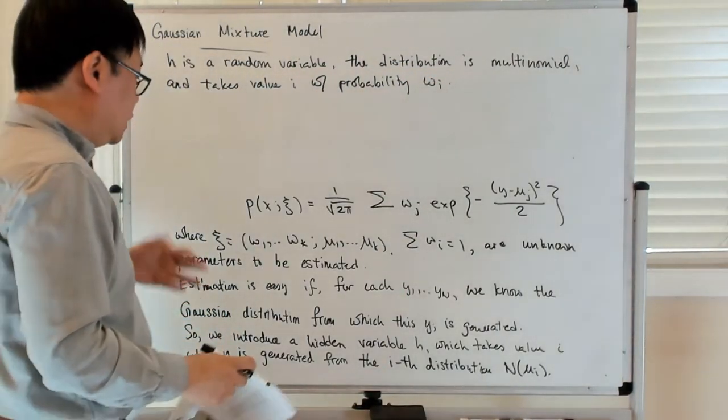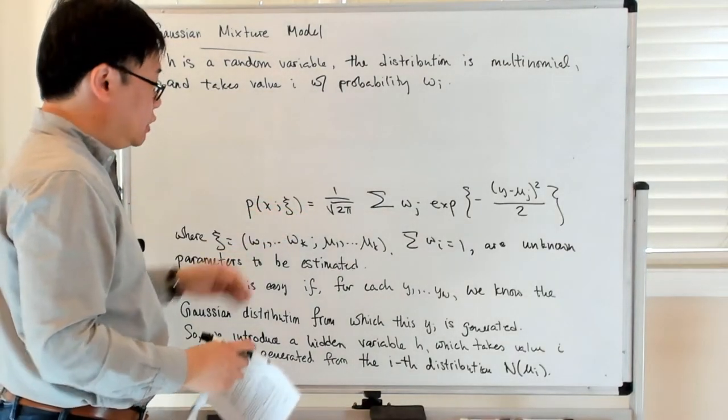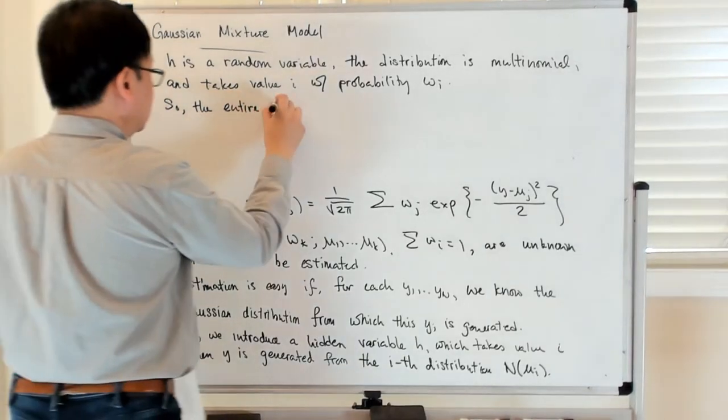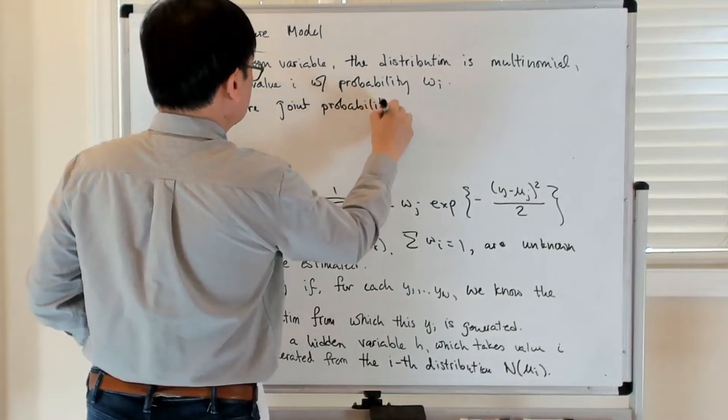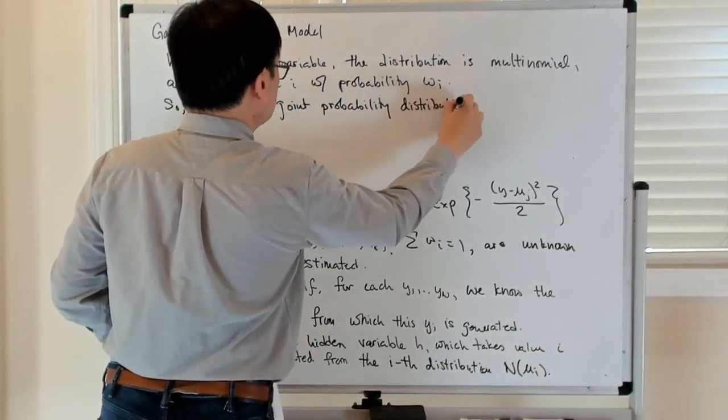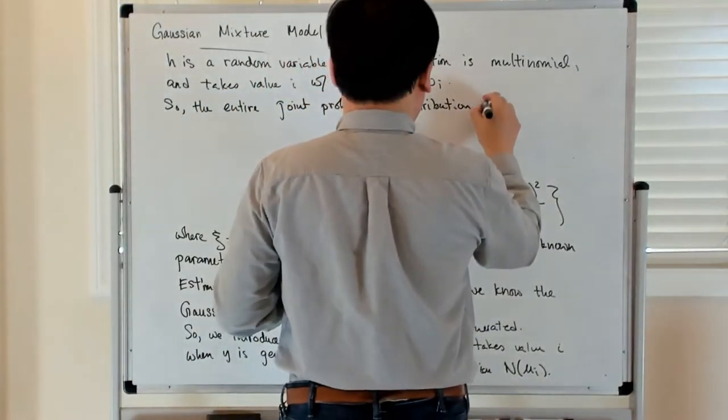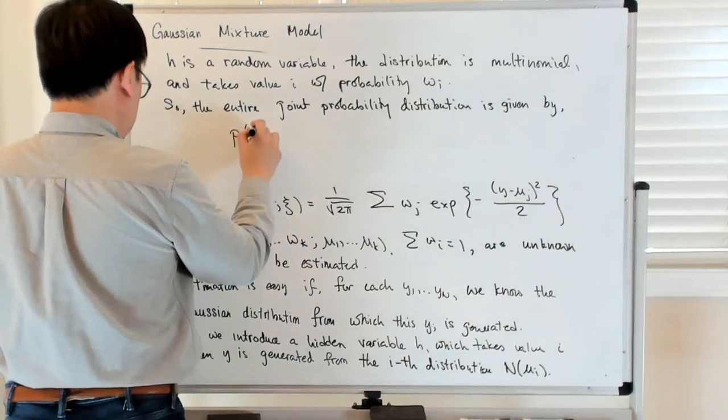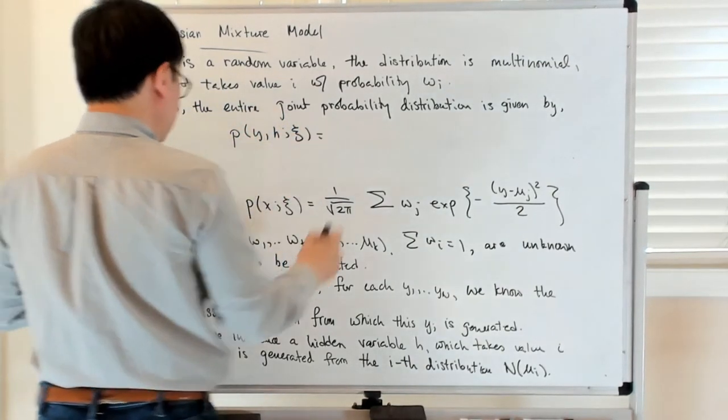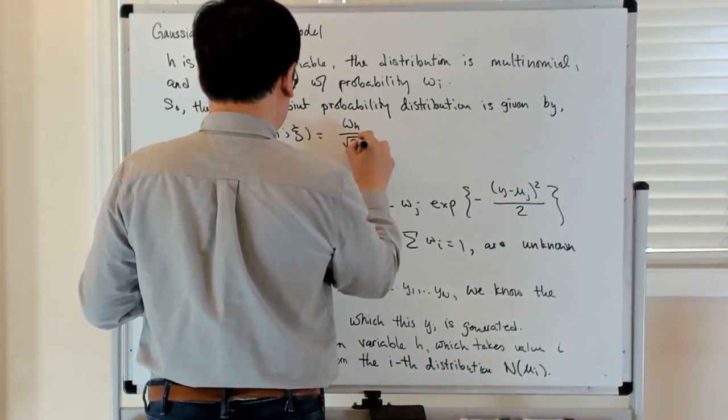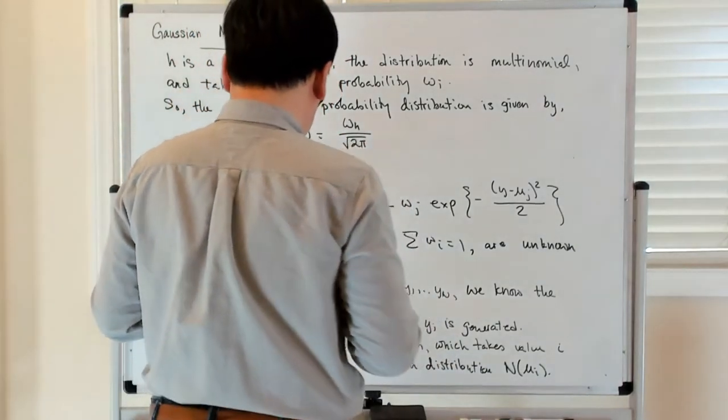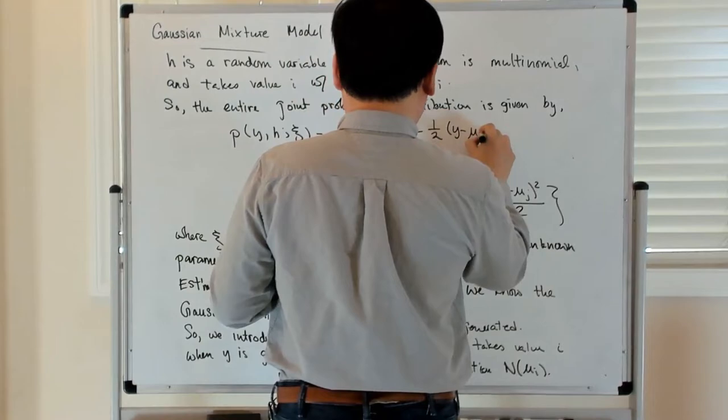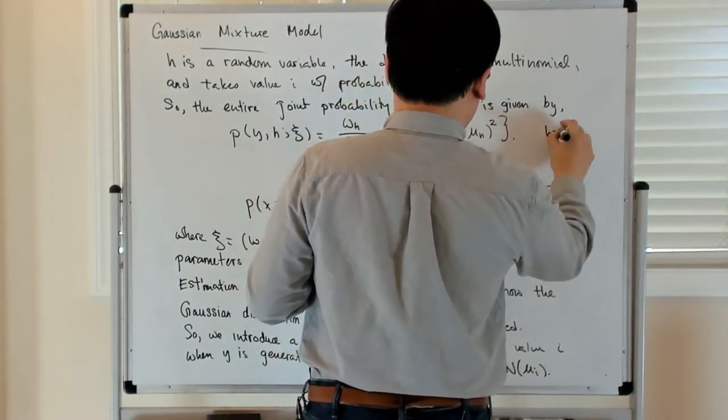So with that interpretation, we can now write down the joint probability distribution in a very simple way. So the entire joint probability distribution is given by p(y,h|θ) = w_h over square root of 2π exponential of minus one-half (y minus μ_h) squared, and h goes from one to k.